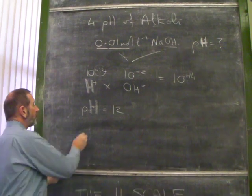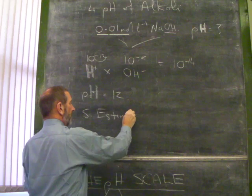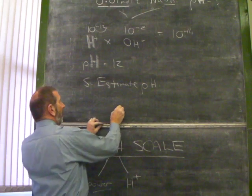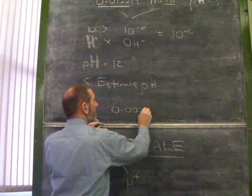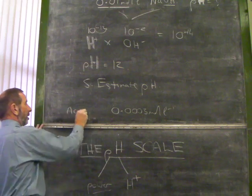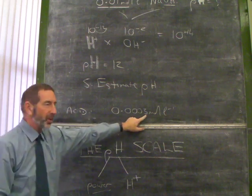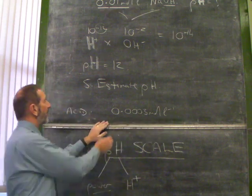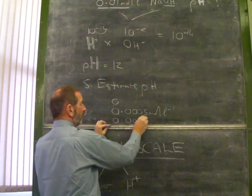Finally, suppose you were asked to estimate a pH. Let's suppose we had an acid with a concentration of 0.00053 moles per liter. Okay? This is an acid. And that's its concentration. What's its pH? Every previous example has been a nice straightforward number, but this is an awkward number. What's its pH? You have to say, well, whereabouts in the pH scale would that be? That is bigger than 0.0001.